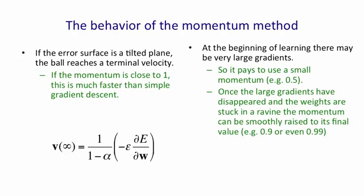Once the large gradients have disappeared, and you've reached the sort of normal phase of learning, where you're stuck in a ravine, and you need to go along the bottom of this ravine without sloshing to and fro sideways, you can smoothly raise the momentum to its final value, or you could raise it in one step, or that might start an oscillation.